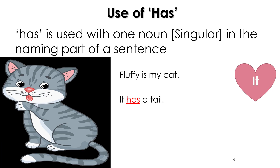Let's see one more example — 'Fluffy is my cat. It has a tail.' So along with the pronoun 'it,' we use 'has.' Remember: when we have the pronouns 'he,' 'she,' or 'it,' we use 'has,' and 'has' is also used when there is a singular noun in the naming part of the sentence.